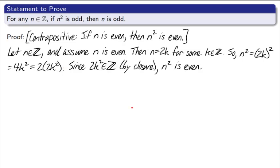Since 2k squared is an element of the integers, by closure, n squared is even. And that's the end of my proof. And remember that even though we did the contrapositive, we did prove the original statement, because the contrapositive is logically equivalent to the original statement. Thus, we really did prove that if n squared is odd, then n is odd. And your reader generally picks up that since you proved the contrapositive, that means you also proved the original statement. There's no need to write that in your actual proof.